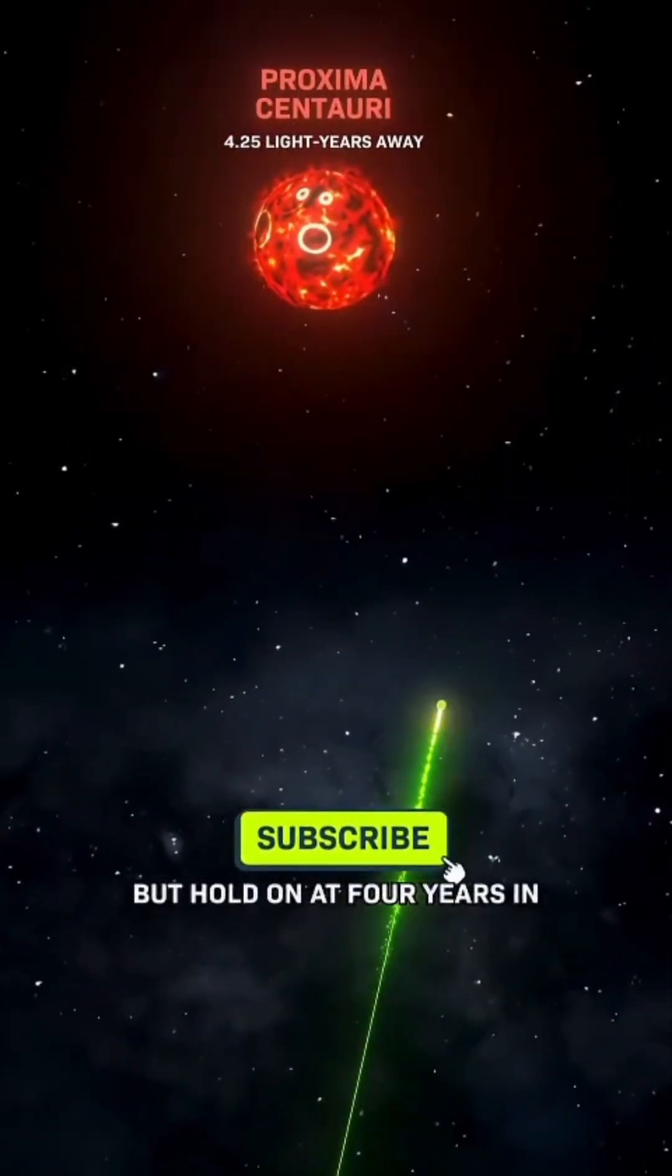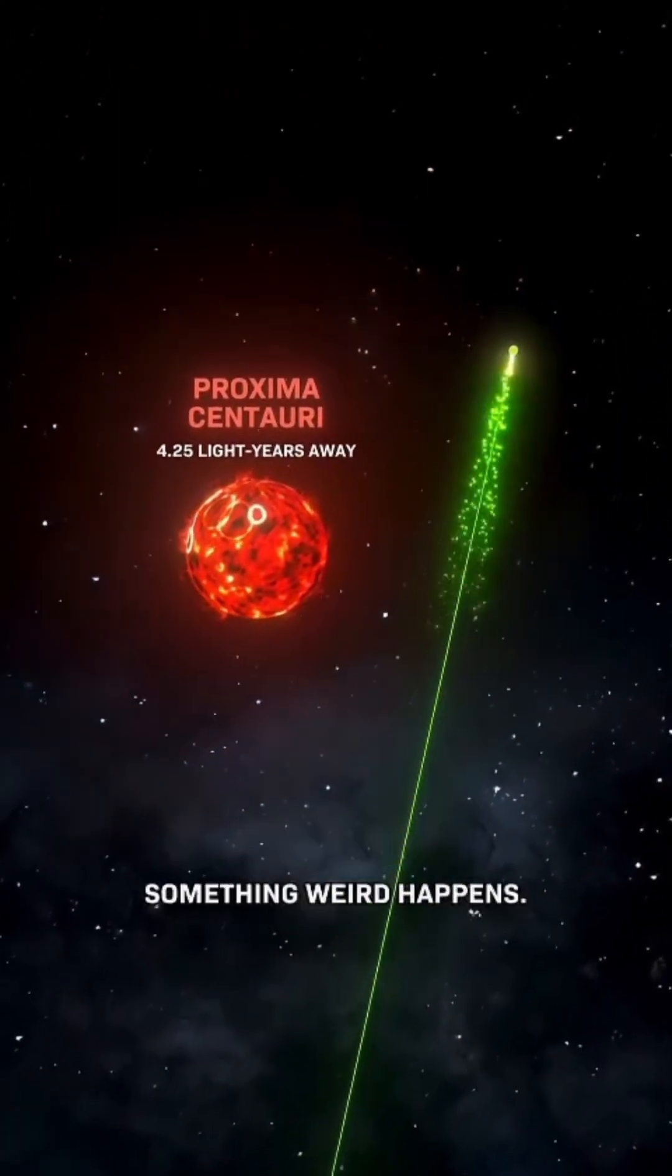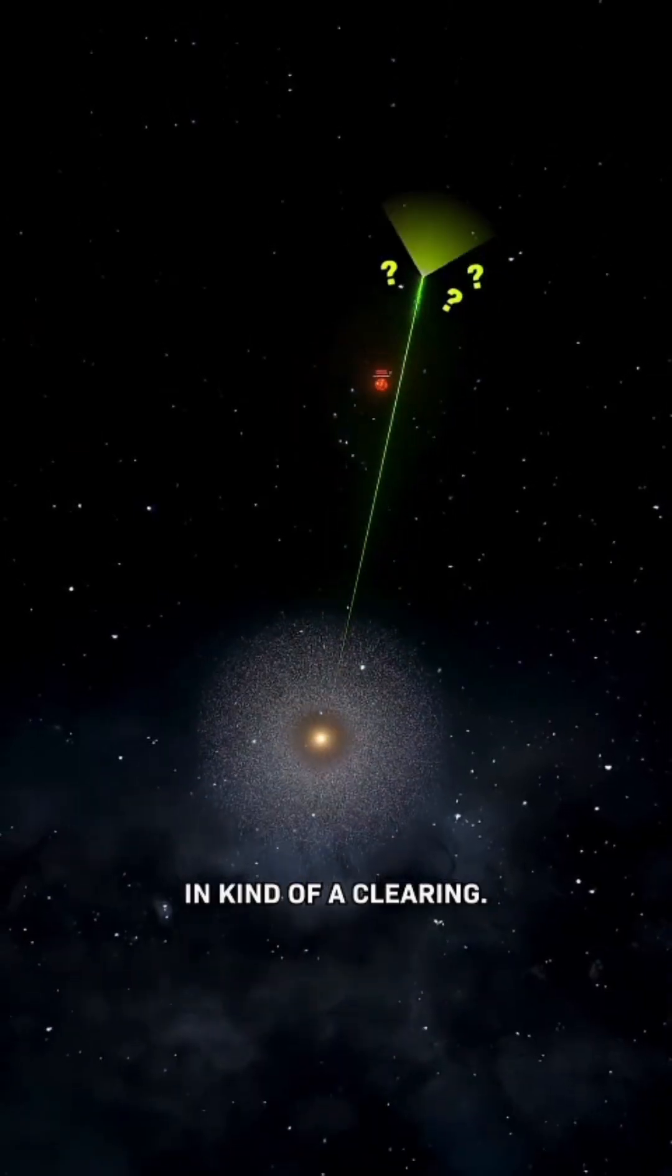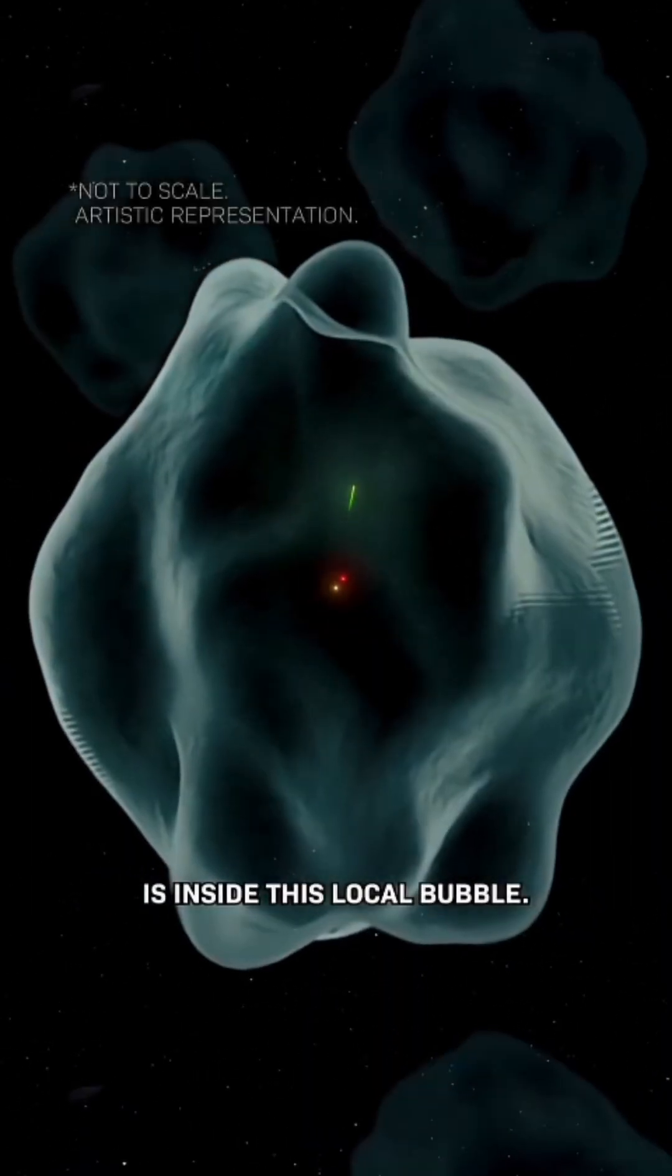But hold on, at 4 years in, just as you're passing our nearest star, something weird happens. You notice that you're in kind of a clearing. It turns out that our solar system is inside this local bubble.